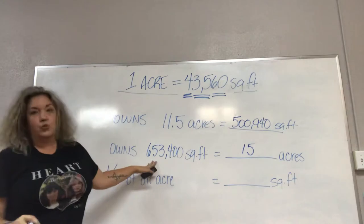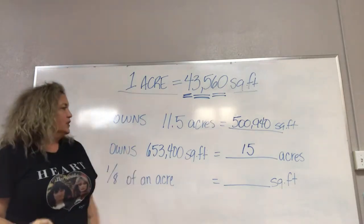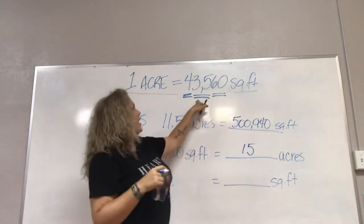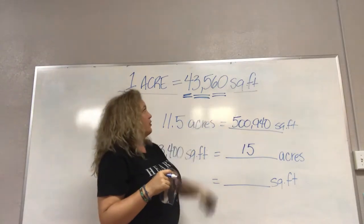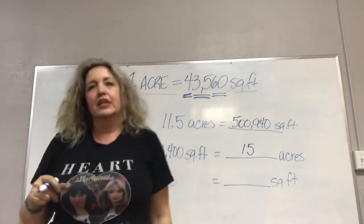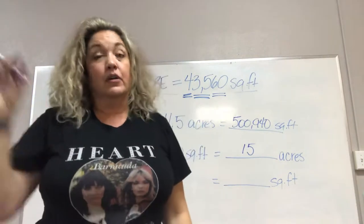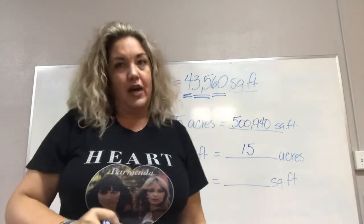So we took the big number of the square footage, 653,400, divided by 43,560 to get the acres. Going from the big number to a small, we divide.